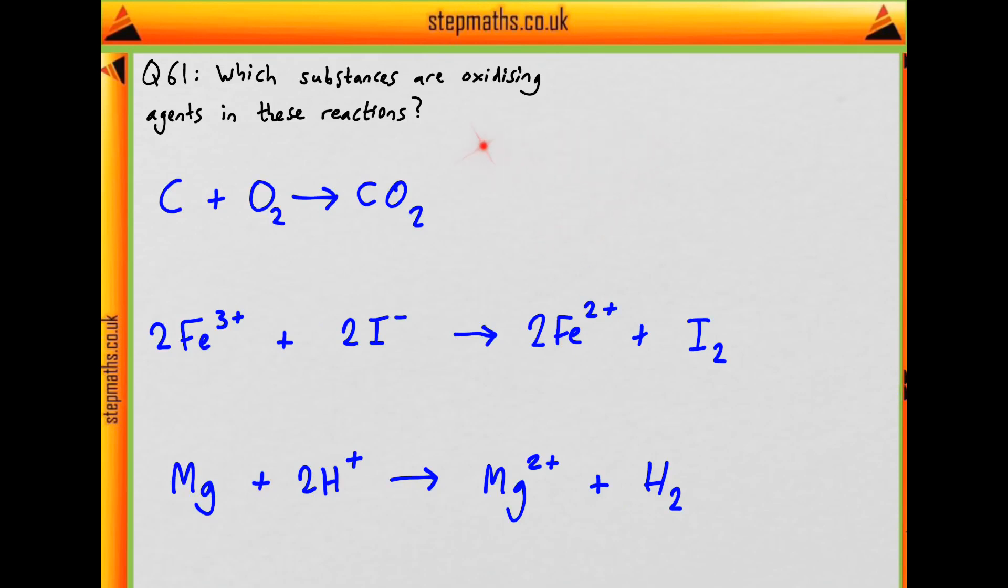First, what is an oxidising agent? It's something that oxidises something else while itself being reduced. And what is oxidation? That's the loss of electrons, so oxidising agents will take electrons in these reactions.